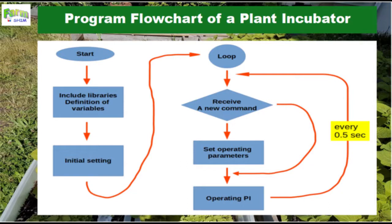And then in the loop routine, I realize a function for receiving commands from the smartphone, a function for setting operating parameters, and a function for operating the plant incubator such as LED light on/off, fan on/off, and the transmission of data to the smartphone. The routine in the loop is done every 0.5 seconds.